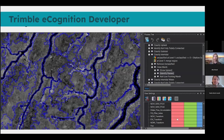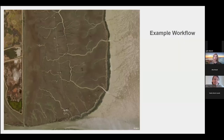The software we used is called Trimble eCognition Developer. You can see a sneak preview of what that rule set looks like. You can sort of see the objects we can pick out in the segmentation — the tidal channels, and even different vegetation along the tidal creeks versus the interior parts of the marsh. I'm going to describe a little bit of an example workflow to give you a sense of the trickiness that can come through, particularly with using aerial imagery.